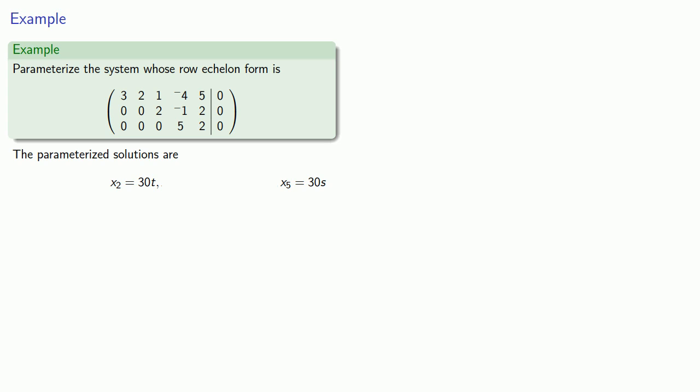Now, we'll substitute these into our equations. So our last equation tells us that 5x4 plus 2x5 is 0. So I'll substitute in my value of x5 and solve for x4.